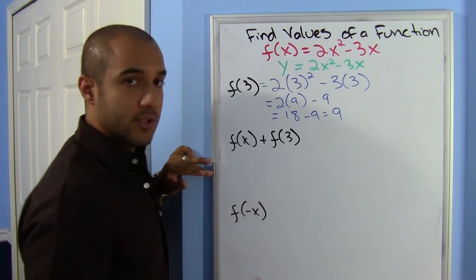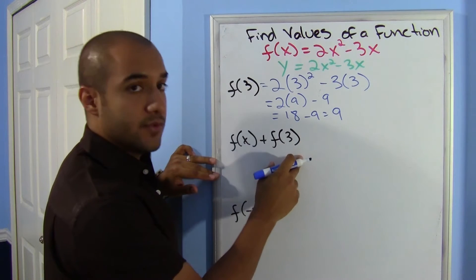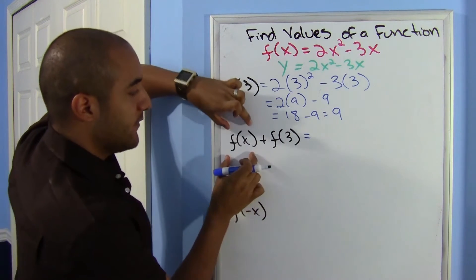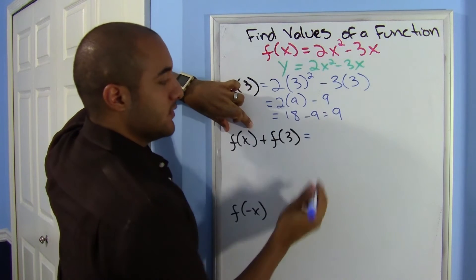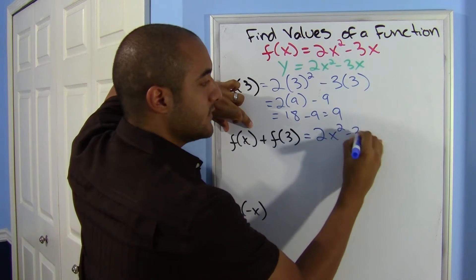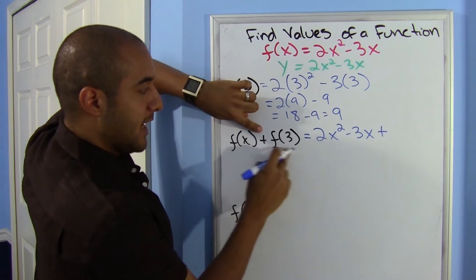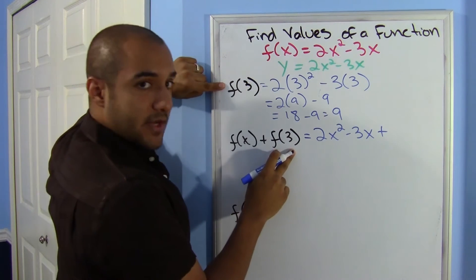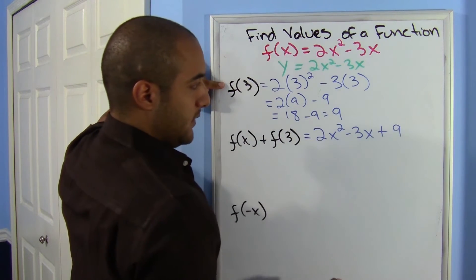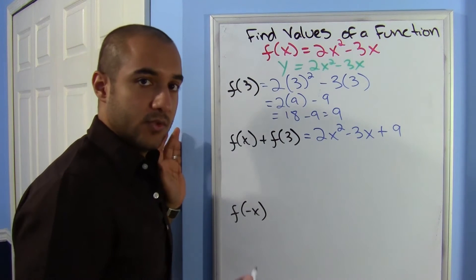They can also ask more obscure things, like how much is F(x) plus F(3). Just do exactly what it says: F(x) is 2x squared minus 3x, and F(3) you already know is 9. So the answer is 2x squared minus 3x plus 9, and there's nothing to simplify further.